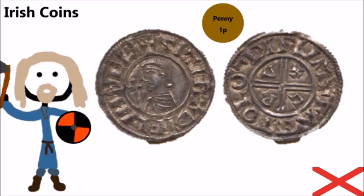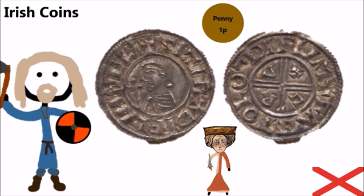Sigtrygg Silkbeard was the first to introduce new coins into Ireland. These coins were produced in England and copied Alfred II's coins. The left hand side shows a bust of Seythric, King of Dublin, while the right hand side of the coin shows the Long Cross of England. People would be able to cut the coins along this cross to make them into half pennies and quarter pennies. The right hand side also says Fastall of Dublin, which is where the coins were issued.